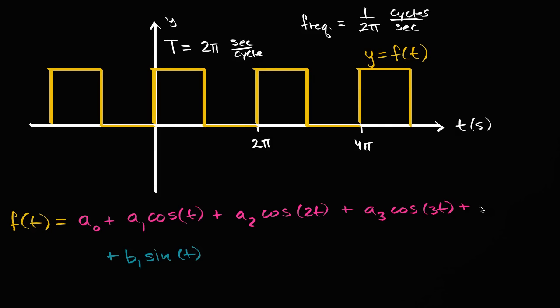And I'm going to keep going on and on and on forever. And I'm going to do the same thing with the sines. So plus b two sine of two t, plus b three sine of three t.